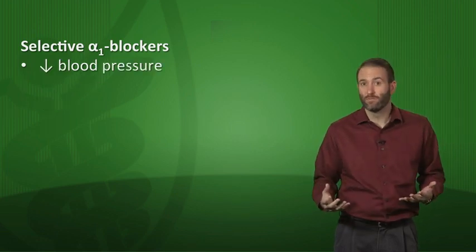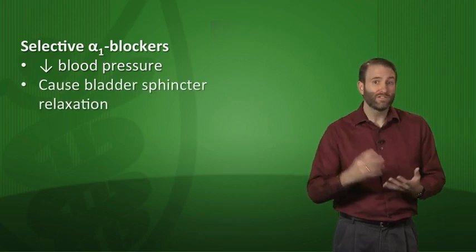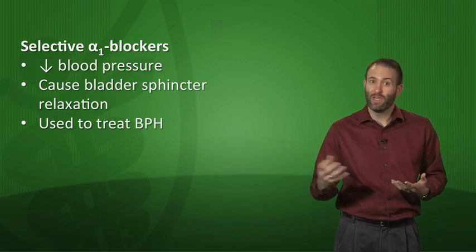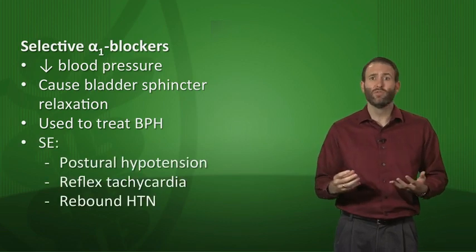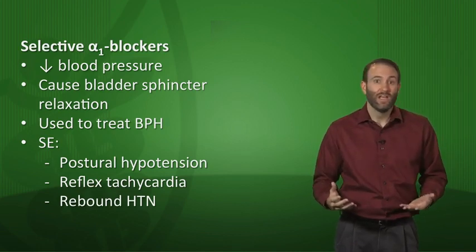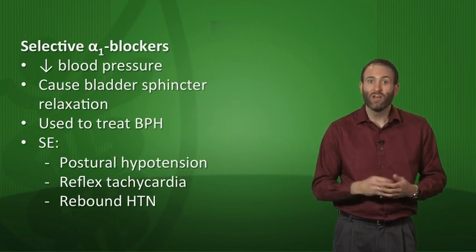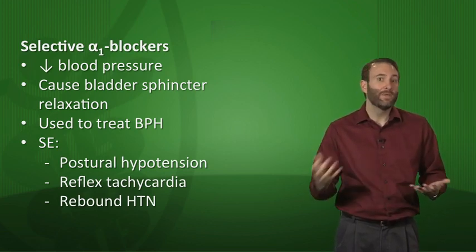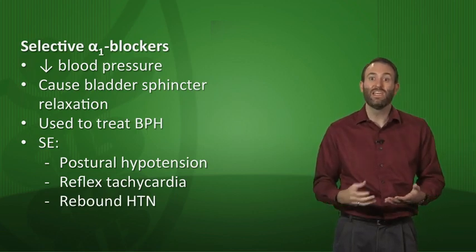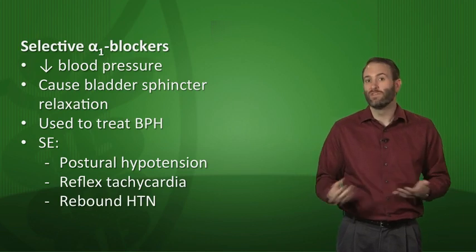Since they block alpha-1, they tend to decrease blood pressure. Clinically, they're probably used more often for their effect on bladder sphincter relaxation — specifically in men with benign prostatic hyperplasia, or BPH. Side effects include postural hypotension: when patients stand up, they tend to drop their blood pressure, which makes sense because these drugs reduce peripheral resistance. You'll also see reflex tachycardia, and rebound hypertension is a concern when you stop these medications abruptly.